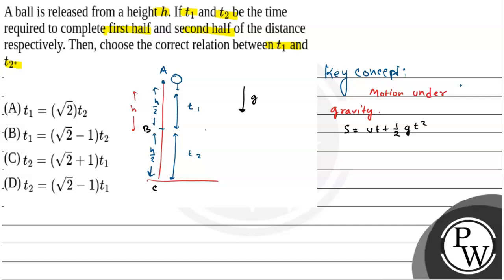Along the path A to B, covering the first half, the initial velocity is 0. The displacement is s equals h by 2 and the time taken is t1. So, h by 2 equals 0 plus half of g t1 squared. This gives us equation 1: h equals g t1 squared.